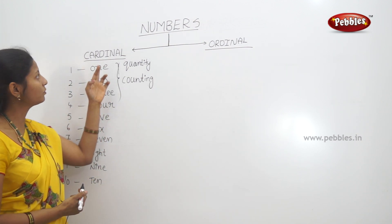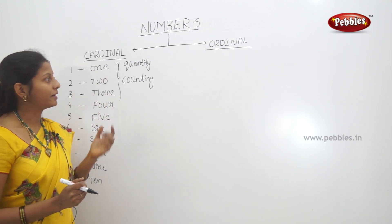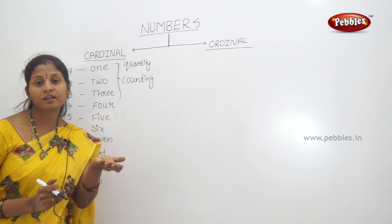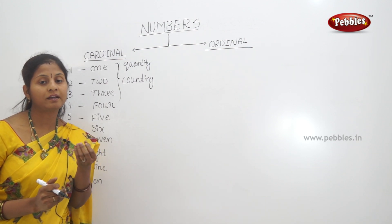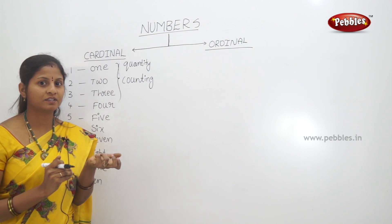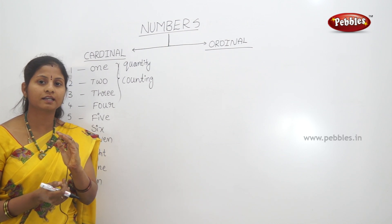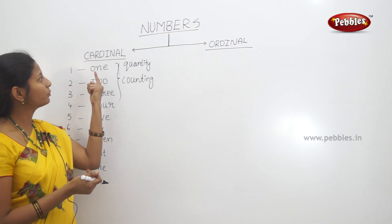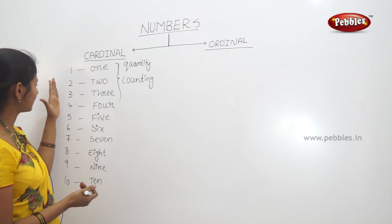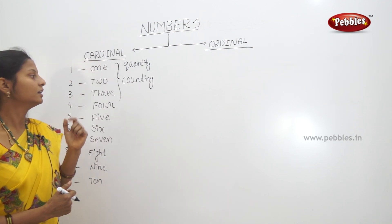When you think about cardinal numbers, you write the quantity — how many years, how many members. Cardinal numbers are used for counting. This means cardinal numbers are critical for expressing quantity.